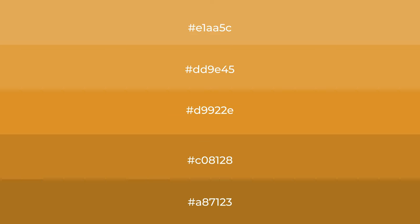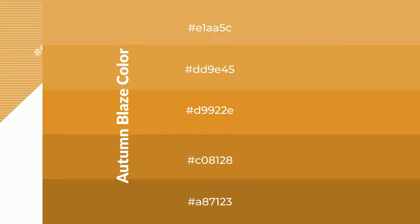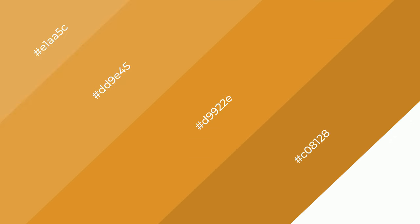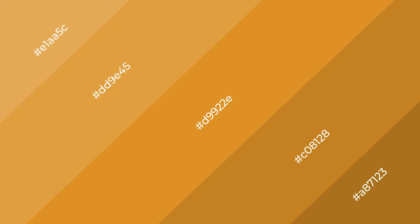To generate shades of a color, we add black to the color, and it is used in patterns, 3D effects, and layers. Shades create depth and drama. Autumn blaze is a warm color and it emits cozier and active emotions.